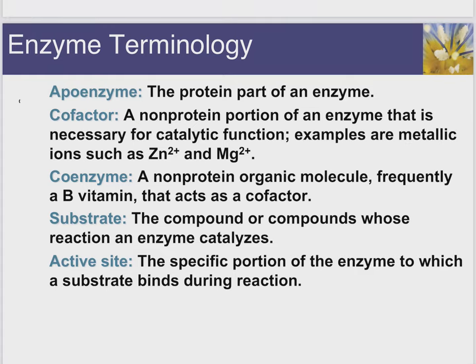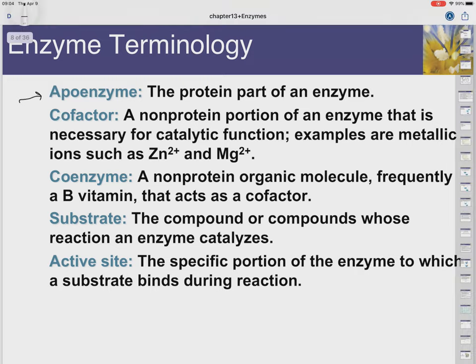There's some terminology. An apoenzyme would be the protein part of an enzyme, assuming that there's a non-protein part. Not all enzymes can be apoenzymes, but some of them require additional pieces. When that's the case, the protein part is called the apoenzyme. The rest of it is called the cofactor. A cofactor, if it's a small metal ion or a small organic molecule, we call it a cofactor. If it is a large organic cofactor, we actually call it a coenzyme.